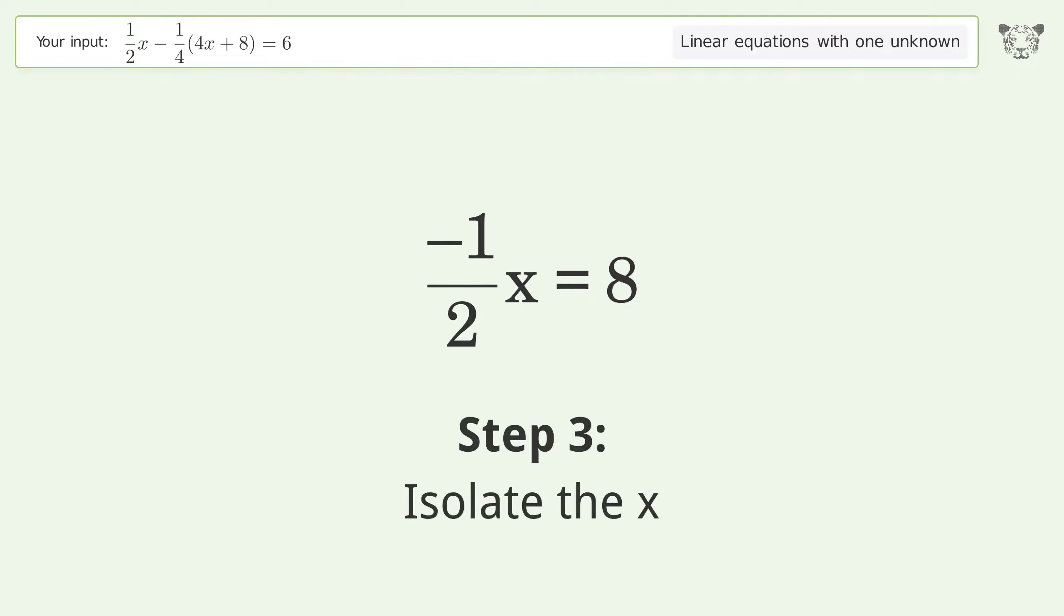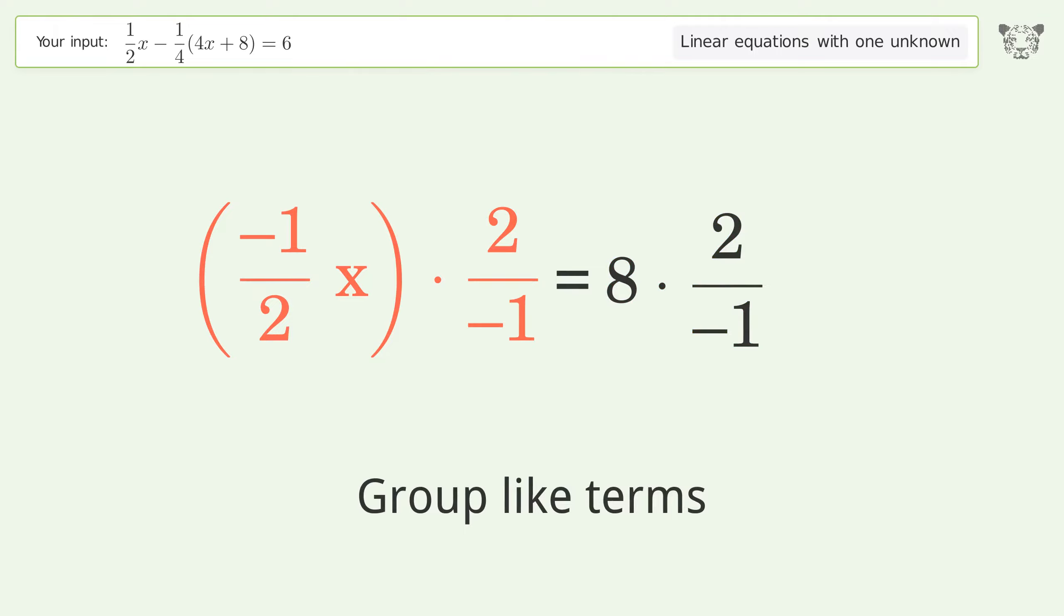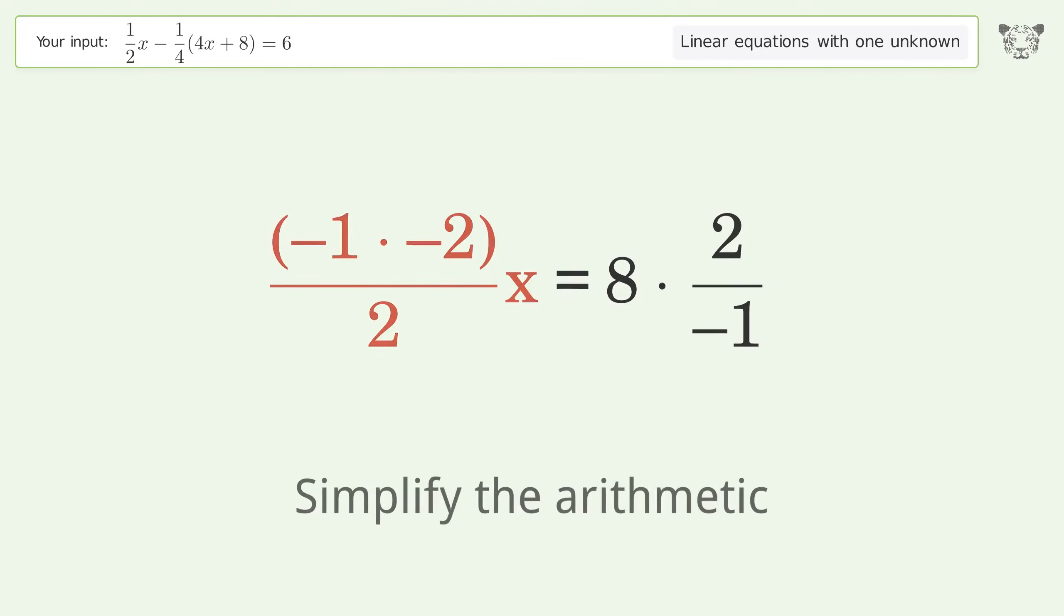Isolate the x. Multiply both sides by inverse fraction 2 over negative 1. Group like terms. Multiply the coefficients. Simplify the arithmetic.